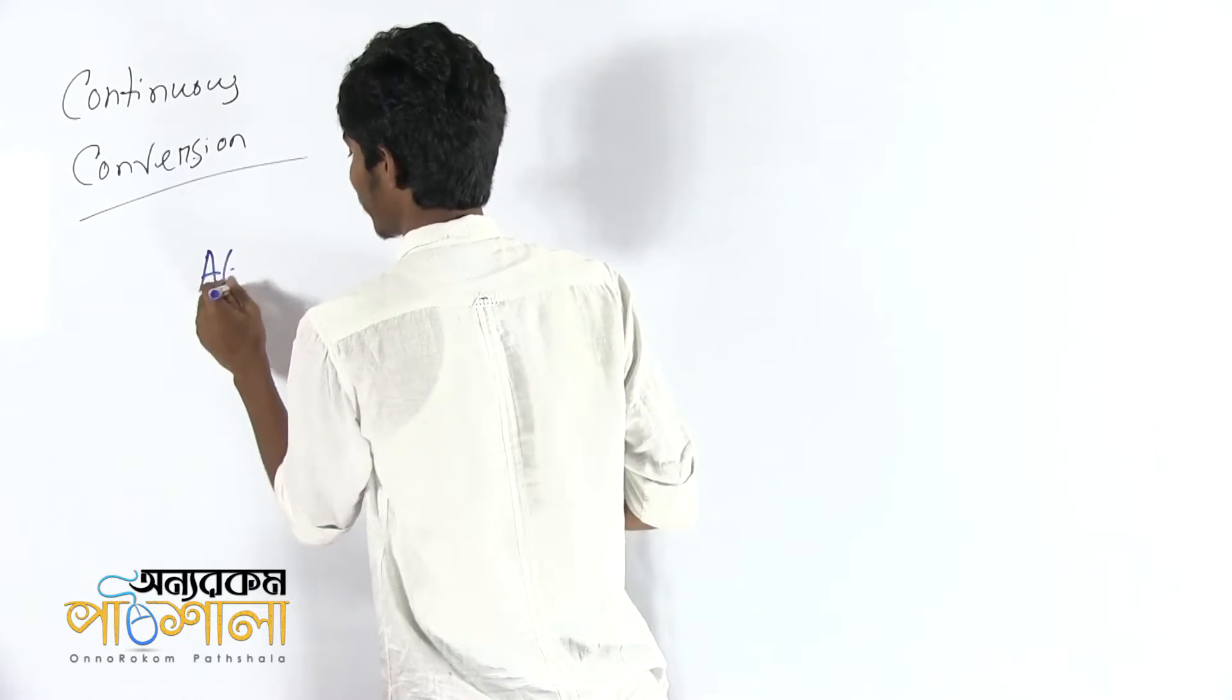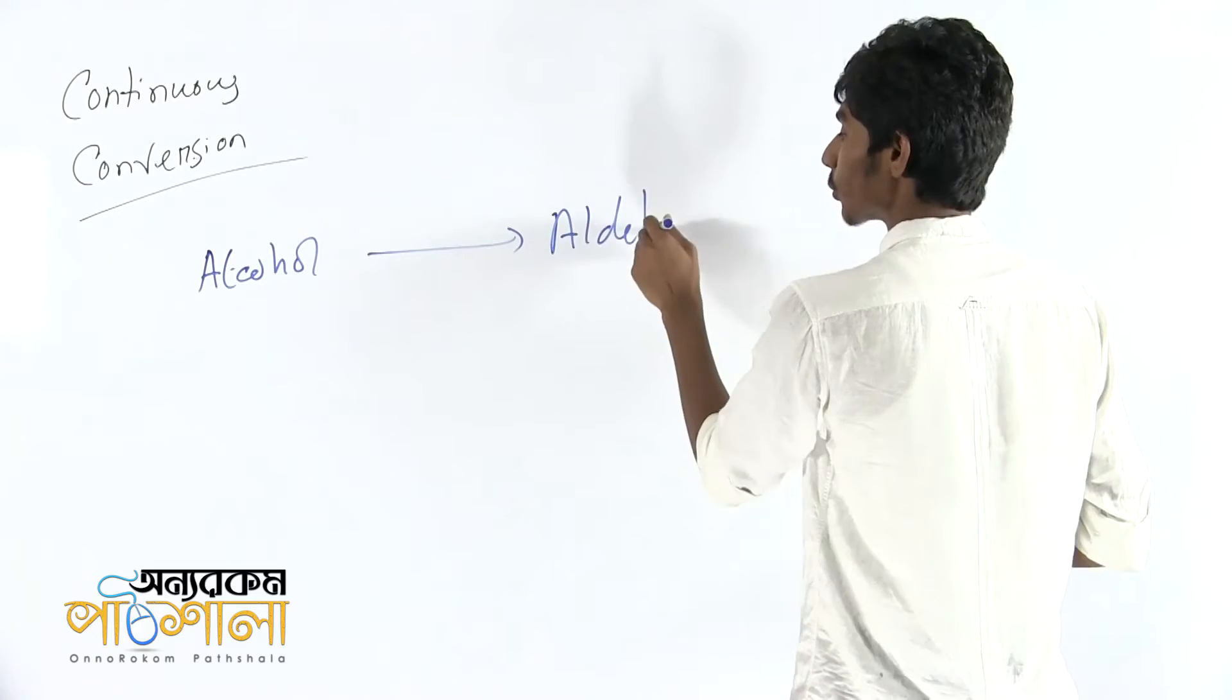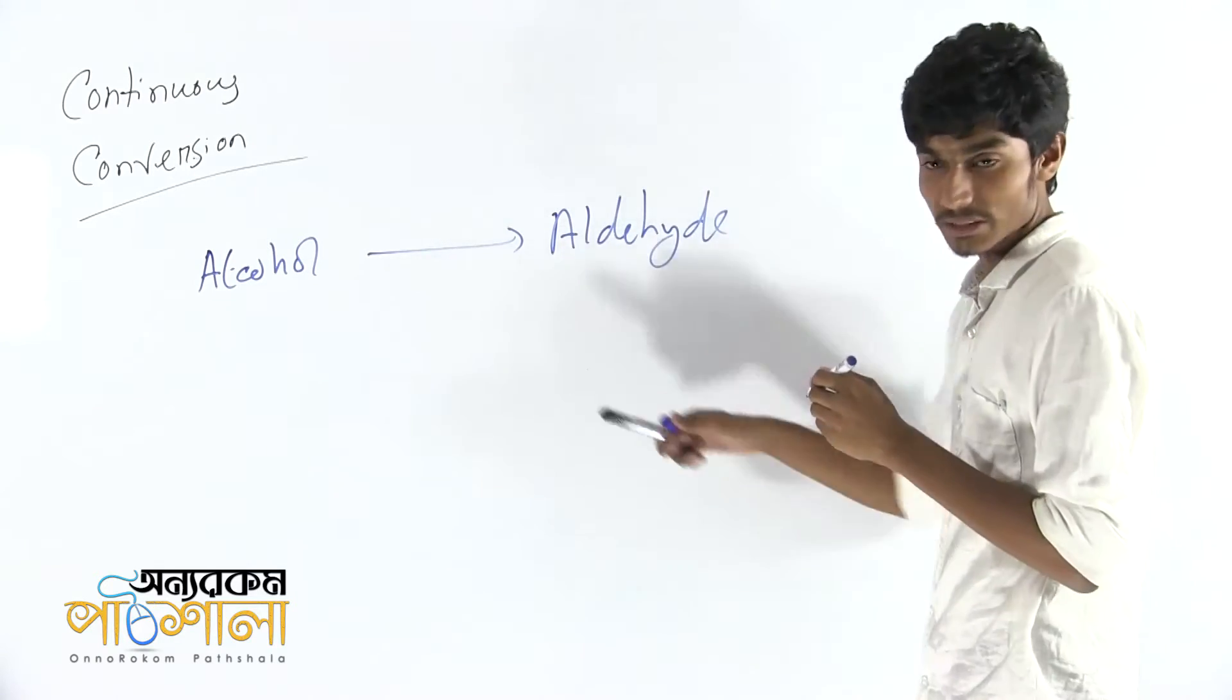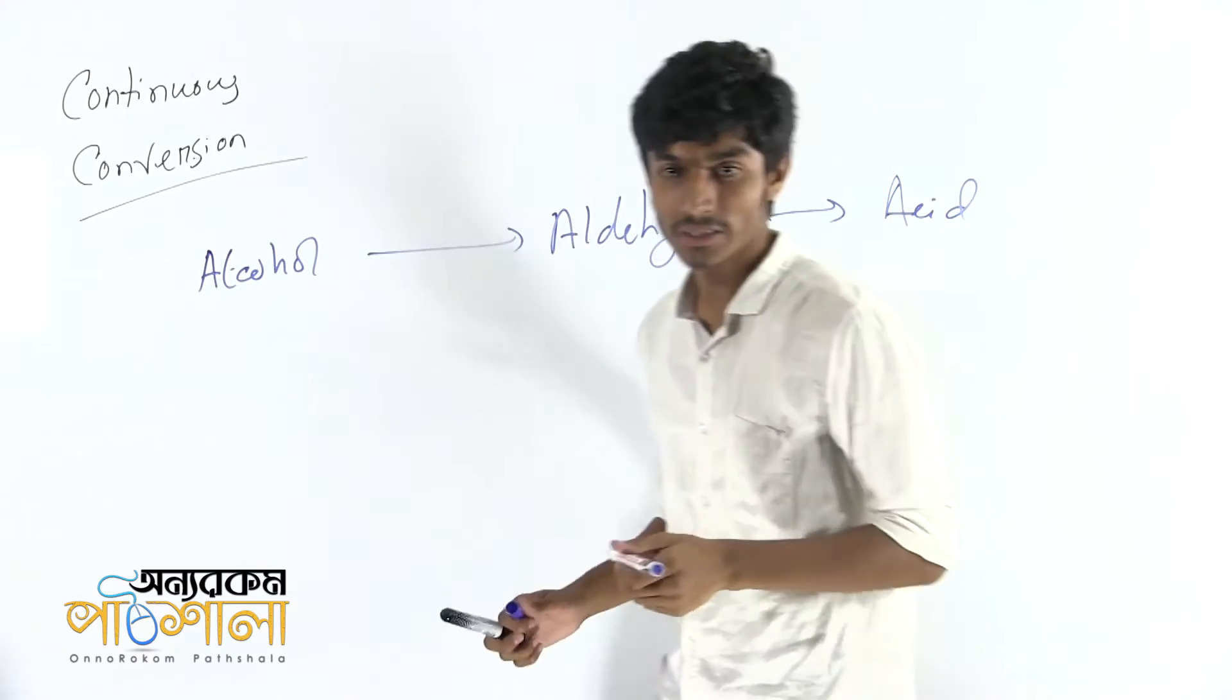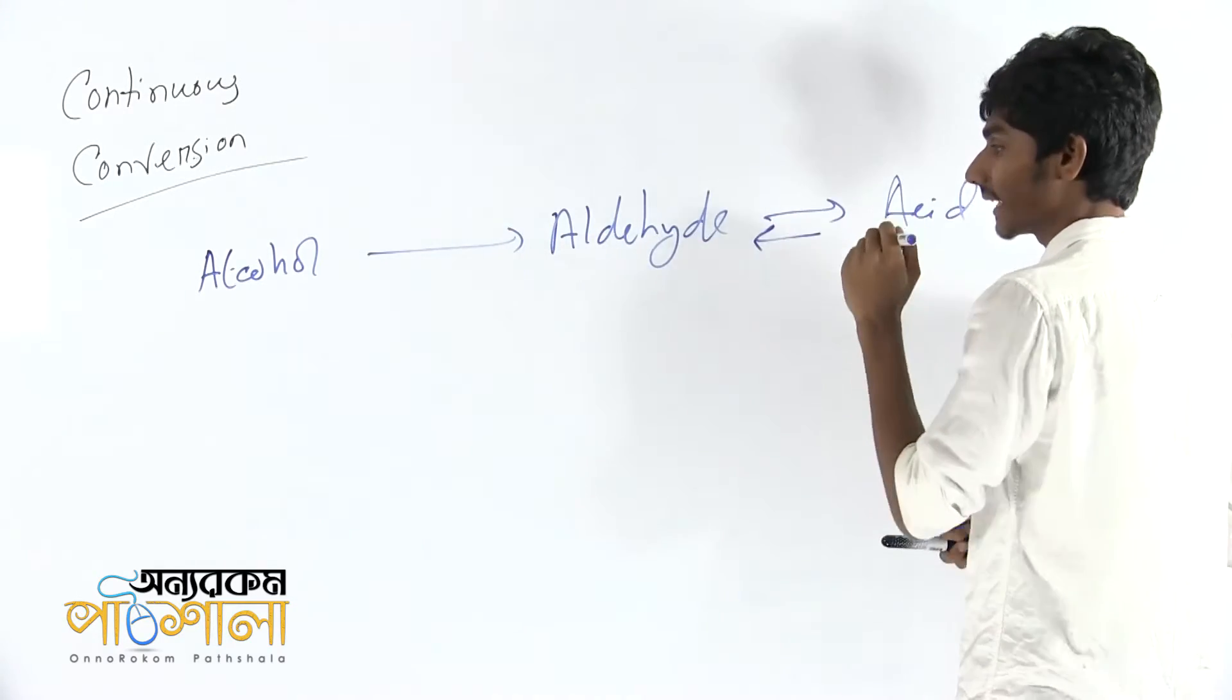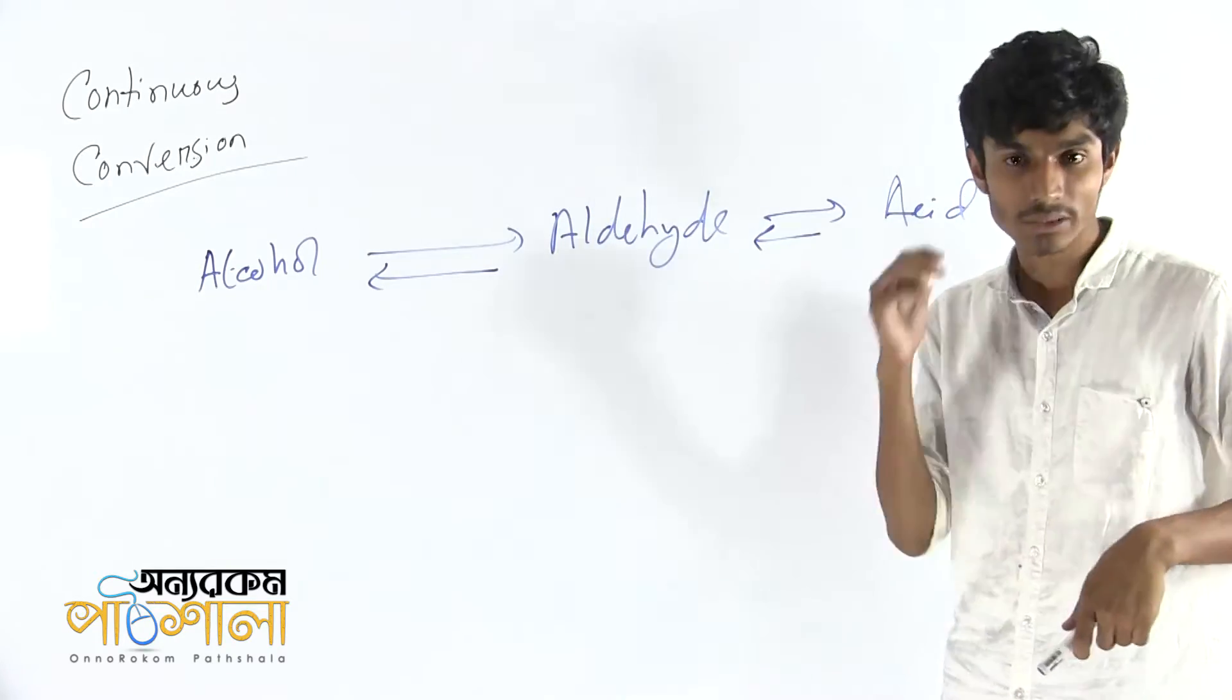First of all, we start with alcohol. Then we start with aldehyde. If we add aldehyde, we add aldehyde to acid. This is our conversion method. Similarly, we add aldehyde to alcohol. This is called Continuous Conversion.